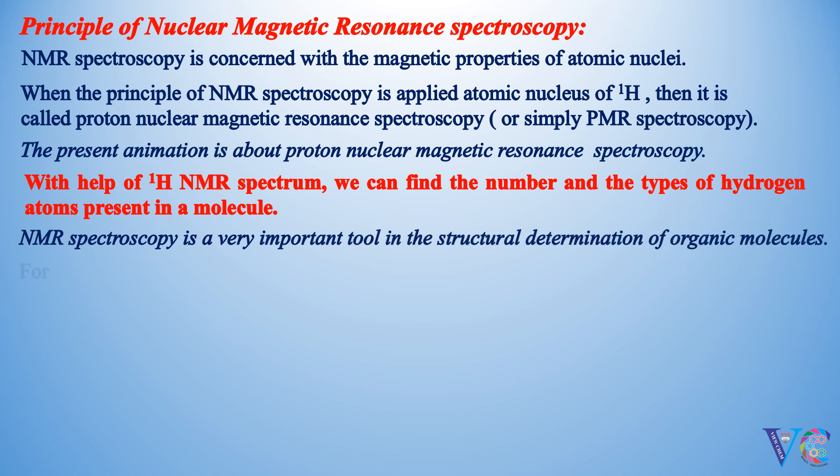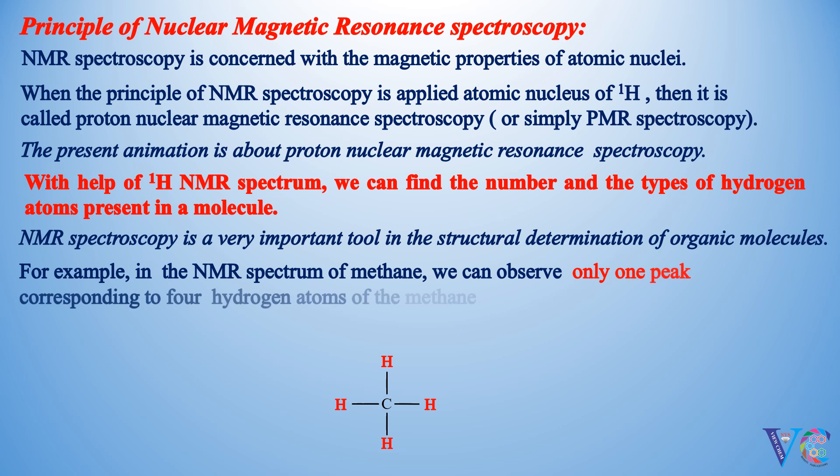For example, in the NMR Spectrum of methane, we can observe only one peak corresponding to 4 hydrogen atoms of the methane, because all 4 hydrogen atoms of methane are in the same environment.